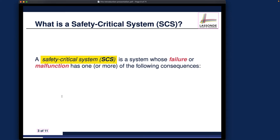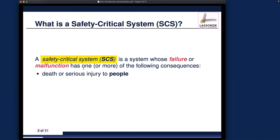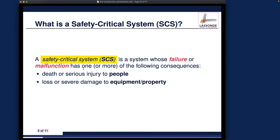Let's start with the definition of a safety critical system. A safety critical system, or SCS for short, is a system where, if it fails or malfunctions, it has one or more of the following disastrous consequences: death or serious injury to people, loss or severe damage to equipment or property, or harm to the environment. As a professional engineer, if you stamp your professional credential on the blueprint for a system that goes wrong, you will be responsible for the loss.